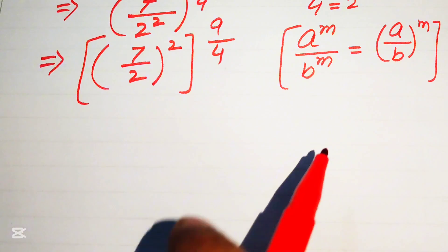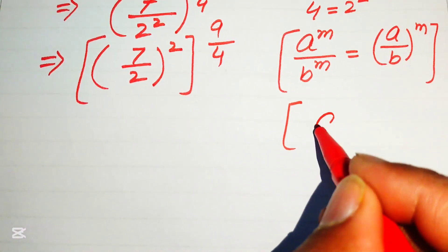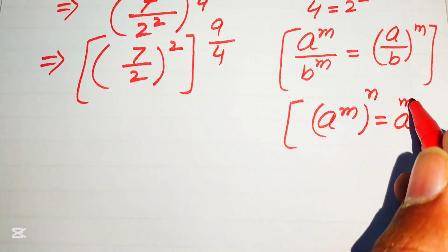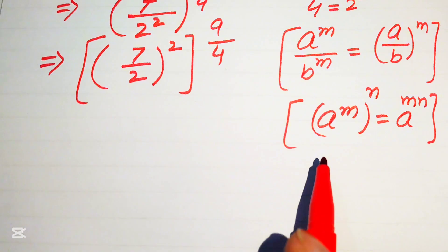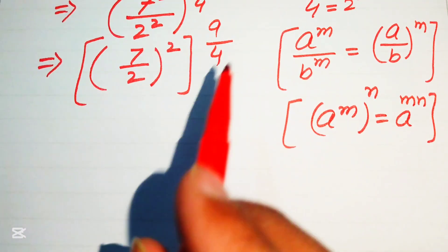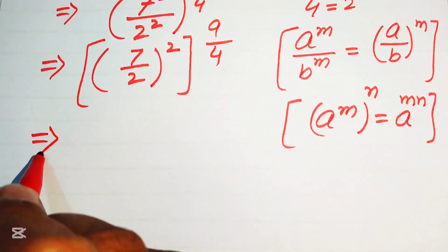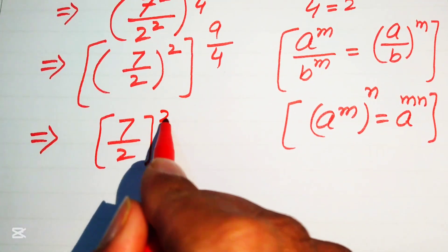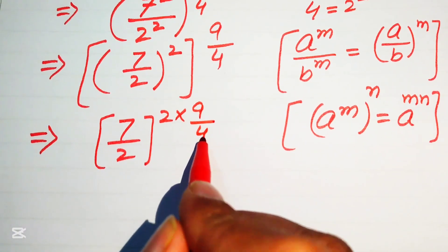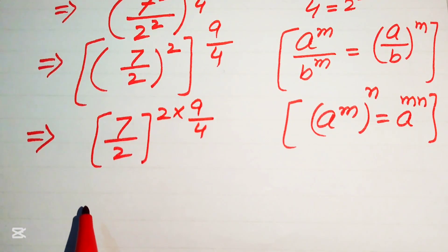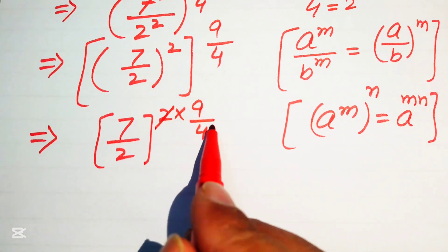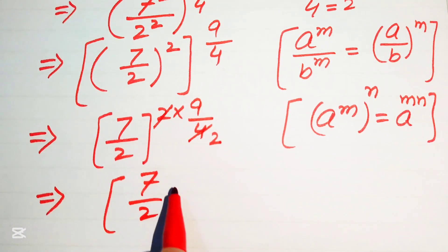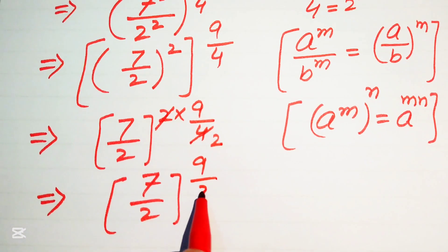For further simplification, we apply another exponent law: (a^m)^n = a^(m×n). We multiply the two exponents — 2 multiplied by 9 over 4. The 2s cancel to give 4 in the denominator, so it simplifies to (7 over 2) to the power of 9 over 2.